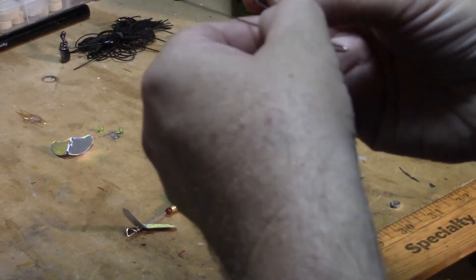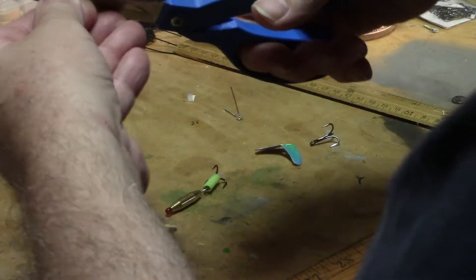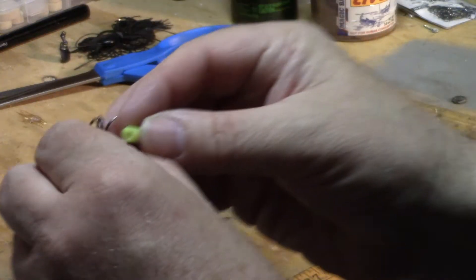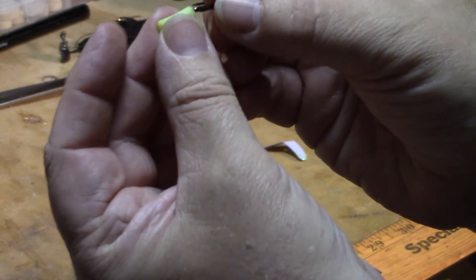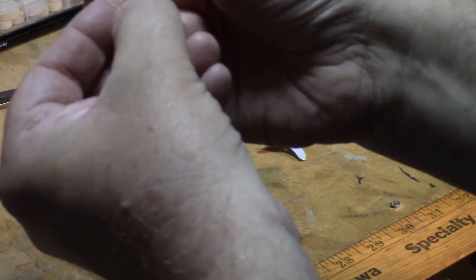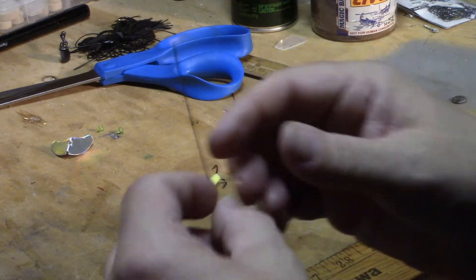But all you've got to do is stick your hook here. Actually I am going to put, just like I did on the other one, a little piece of chartreuse tubing. Slip that over your hook. Stick your hook through here. And then put your body on.